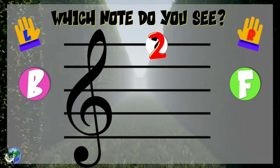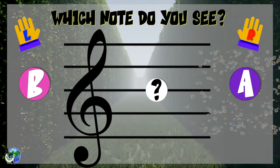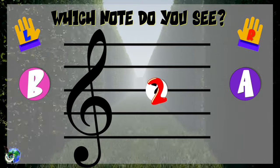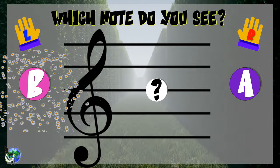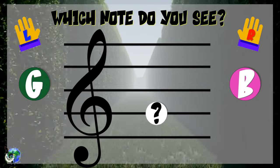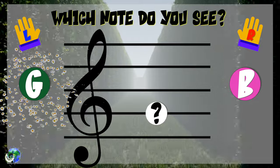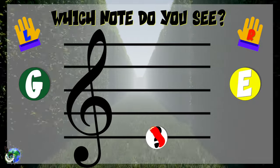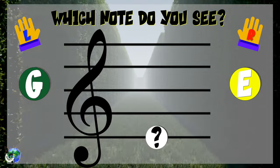Which note do you see? 3, 2, 1 — F. Which note do you see? 3, 2, 1 — B. Which note do you see? 3, 2, 1 — G. Which note do you see? 3, 2, 1 — E.